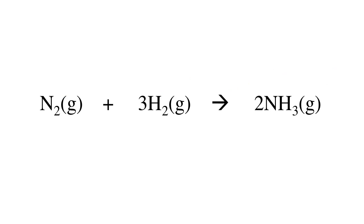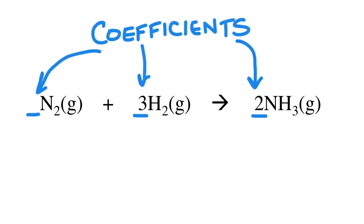Chemical equations show the elements and compounds that react together and those that are produced. The number in front of each, called coefficients, show the amount in moles of each of those elements and compounds.